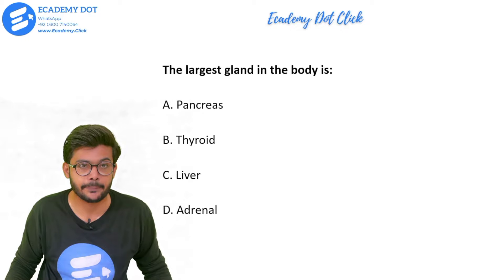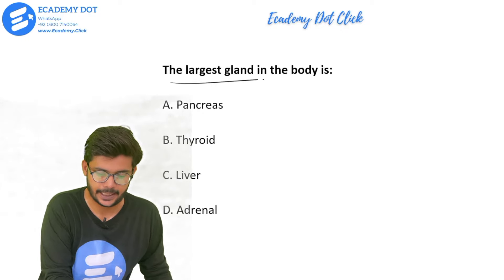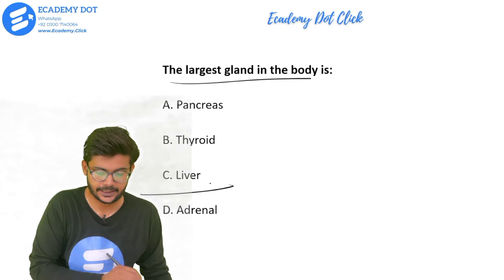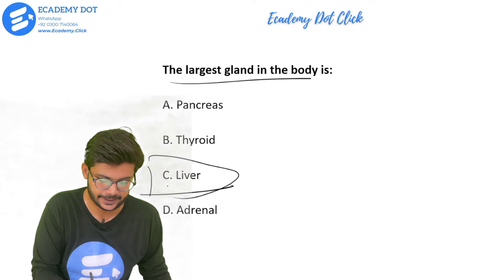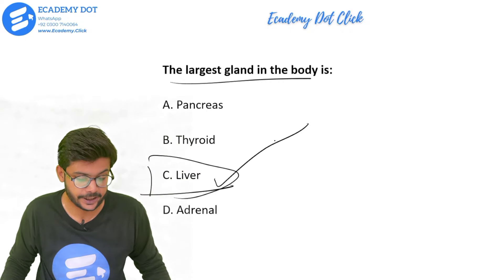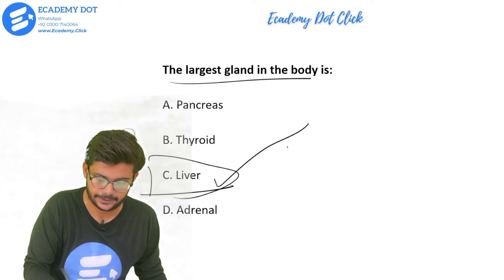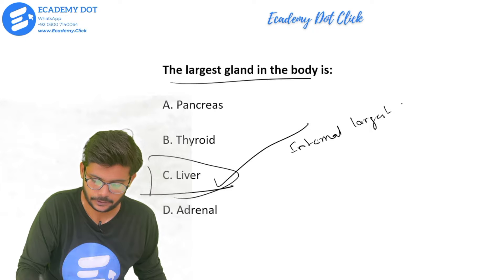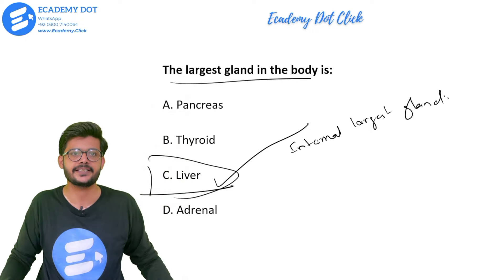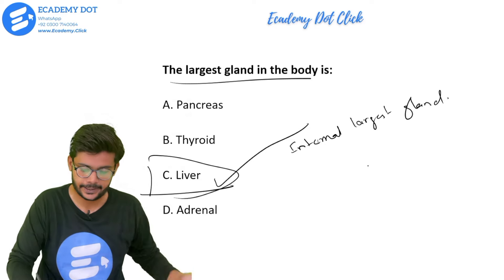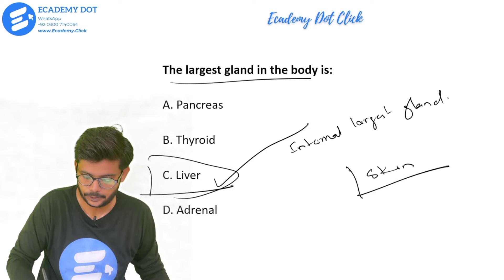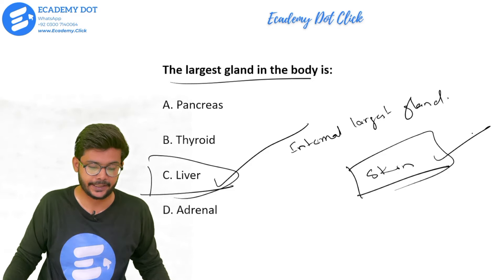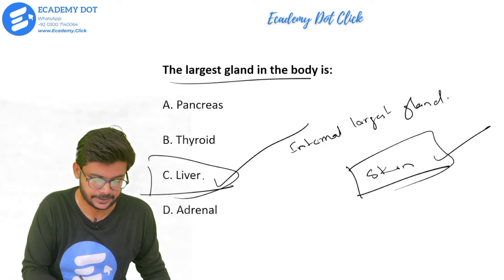The largest gland in the body — options are pancreas, thyroid, liver, or adrenal. The right answer is option C, that is liver. Liver is the largest internal gland. Note: if a question asks about the external largest gland of the body, that would be skin.